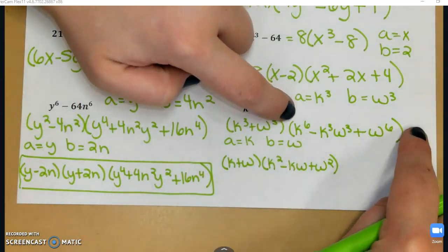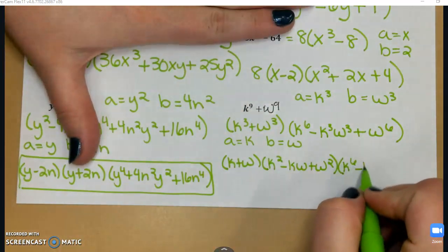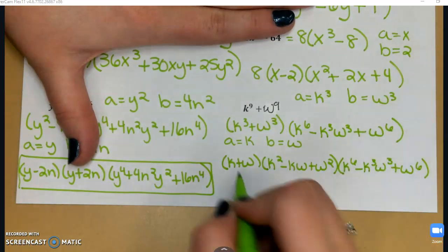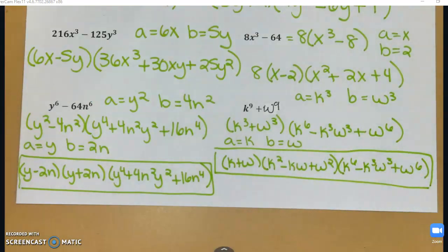Now I just need to bring down that last parentheses exactly how it was before. And now this is my final factored answer.